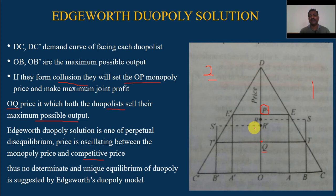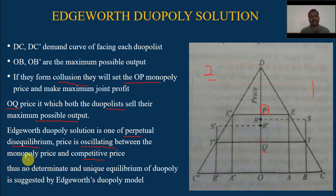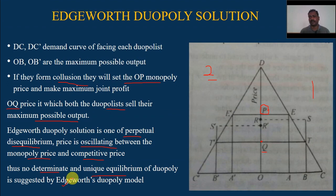So this price cut will continue for both firms. According to Edgeworth, the solution is one of perpetual disequilibrium — price oscillates between the monopoly price OP and the competitive price OQ. There is no determinate and unique equilibrium of duopoly suggested by the Edgeworth model; there is no determinate equilibrium solution. The price continuously oscillates between the monopoly price and the competitive price in this duopoly model.